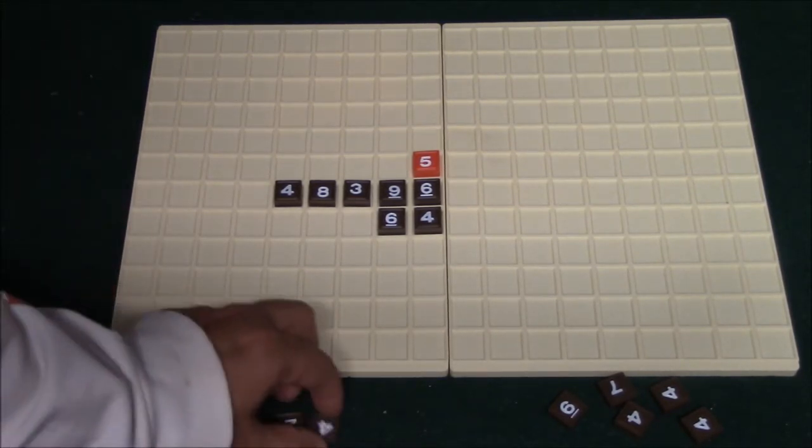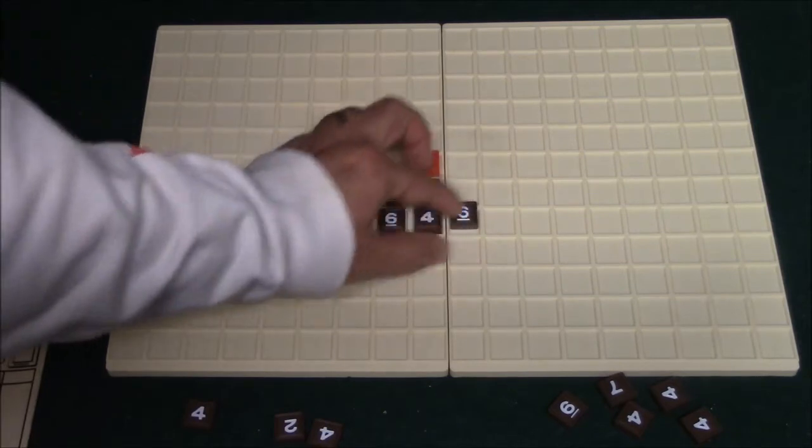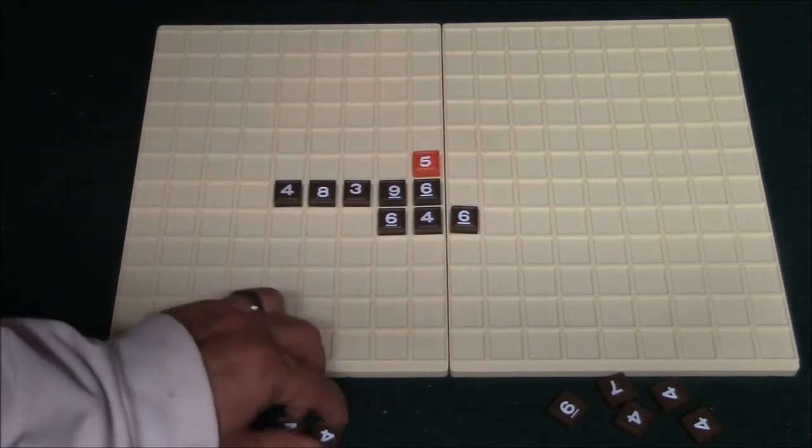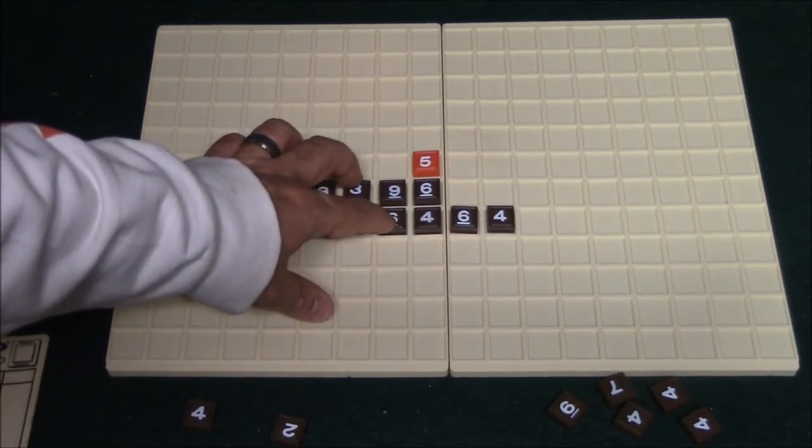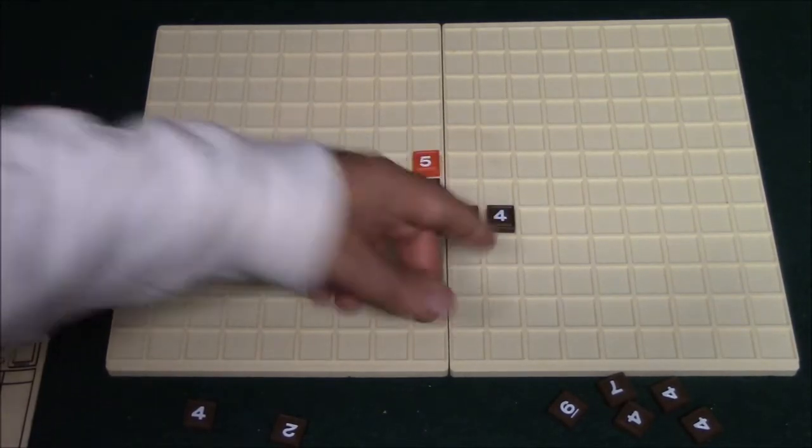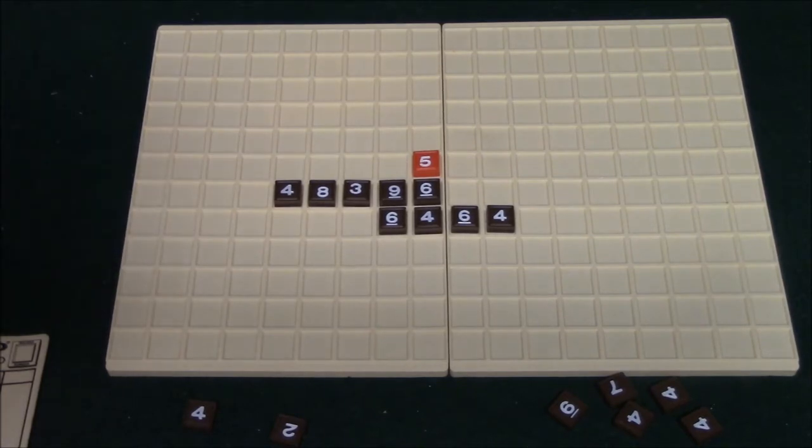So let's just say he plays a six here and he plays a four here. So he's going to score 15 for this, and then he is going to score 20 for this, which is going to give him a total of 35 points.